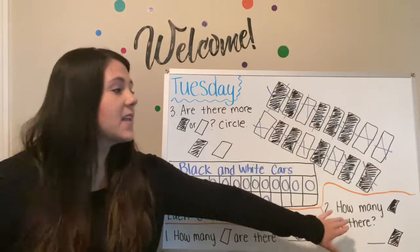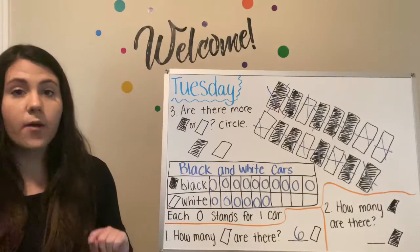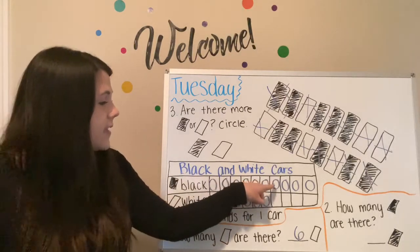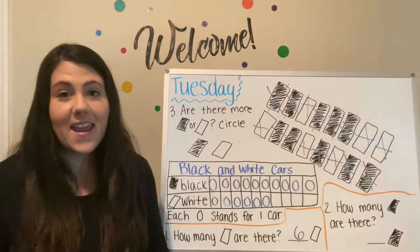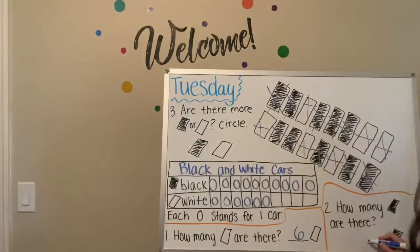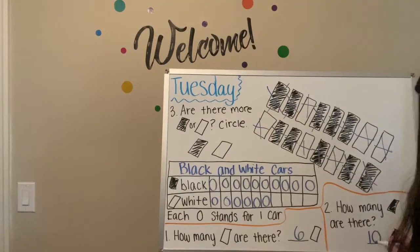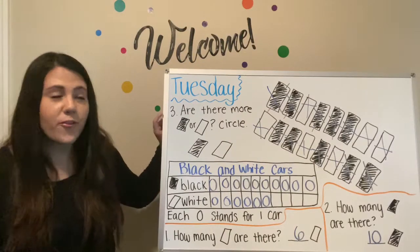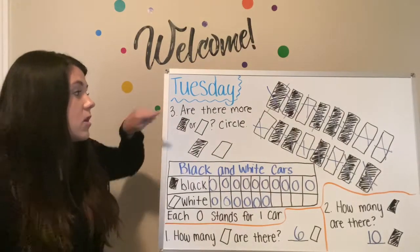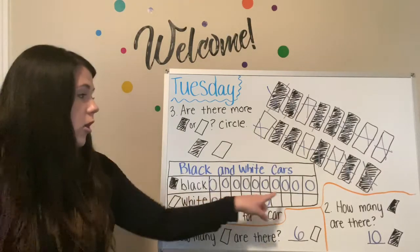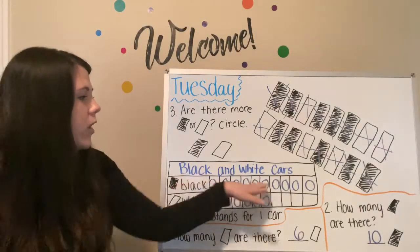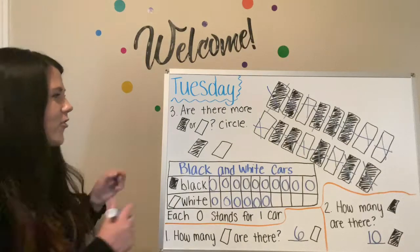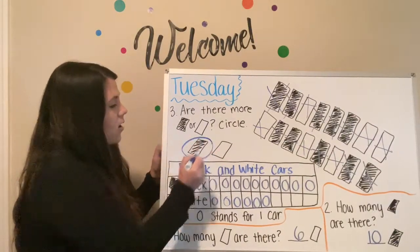Number two: how many black cars are there? Let's count in our picture graph: one, two, three, four, five, six, seven, eight, nine, ten. There are ten black cars. Number three: are there more black cars or white cars? Circle which one. If we look at our graph we can easily see which one has more circles — and that's the black car. Great job! So we're going to circle the black car on our paper.